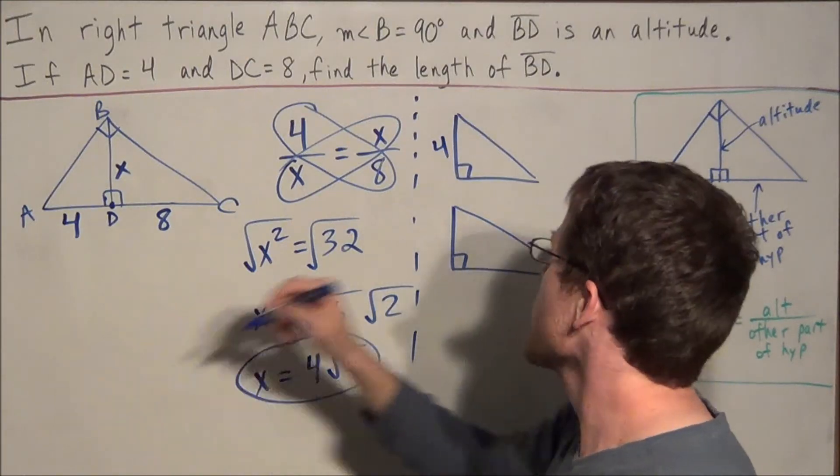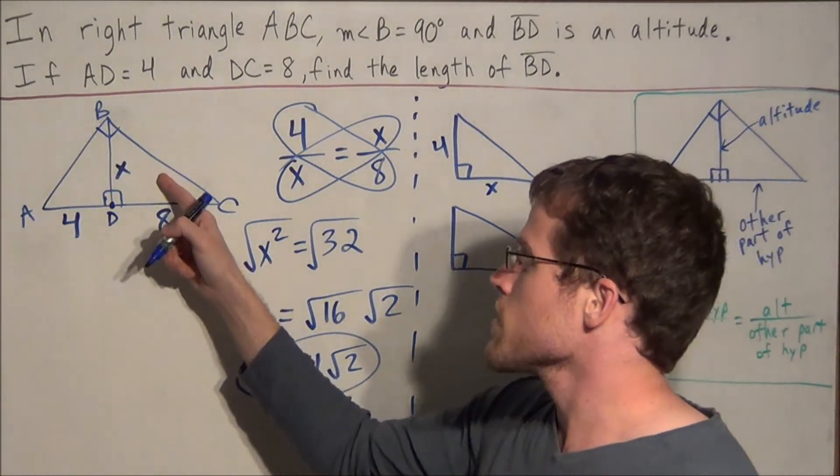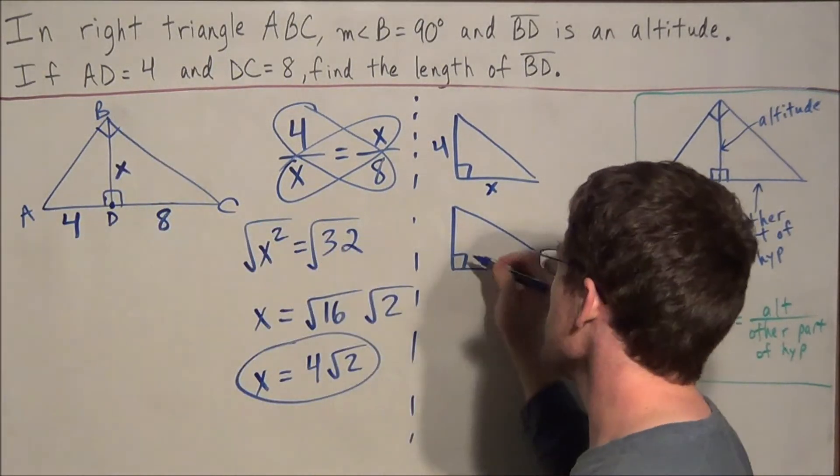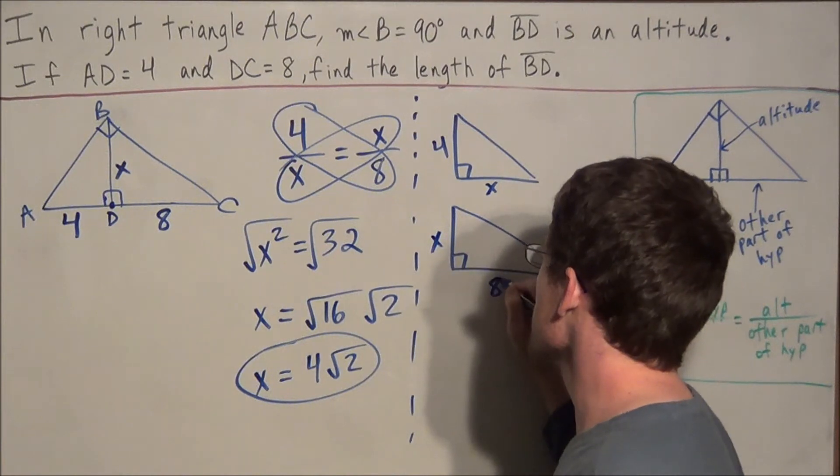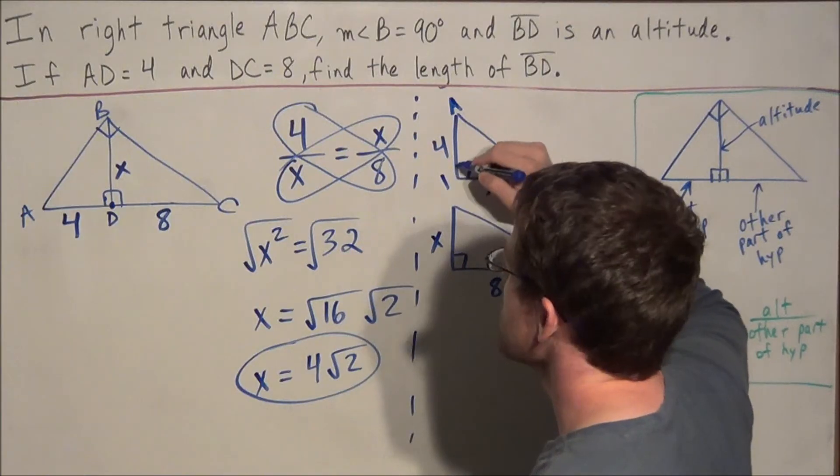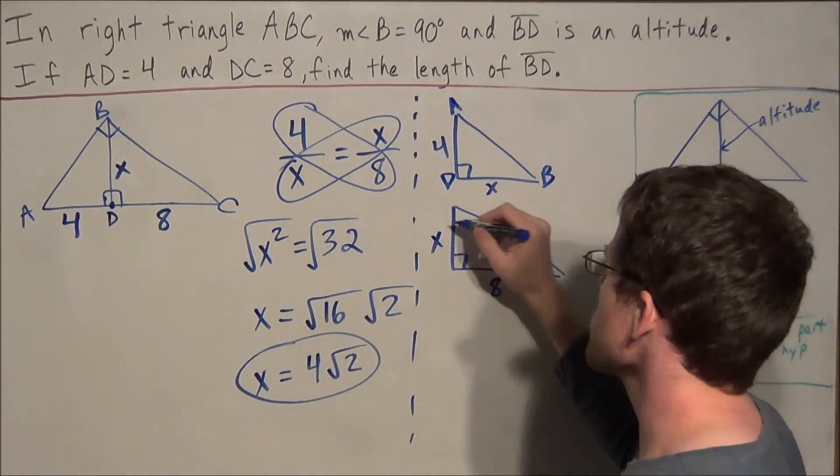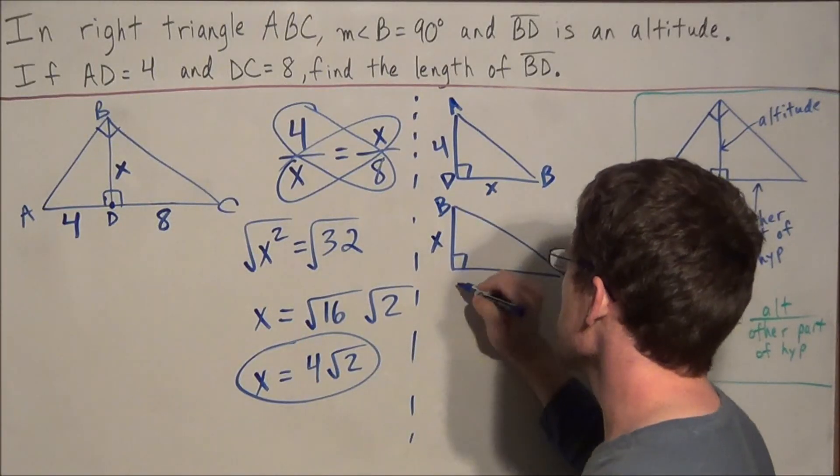that when the right angle is in the lower left corner, that would place the leg 4 in this location, and we would have X in this location here. Whereas in triangle BDC, we would have X and 8.